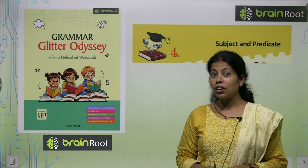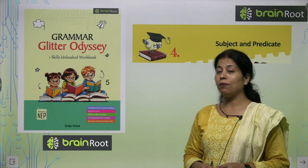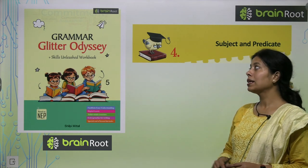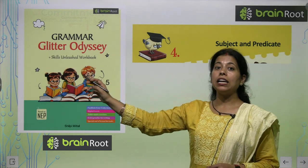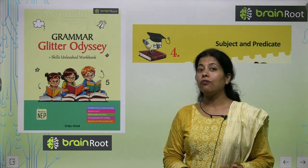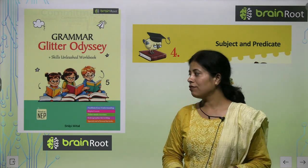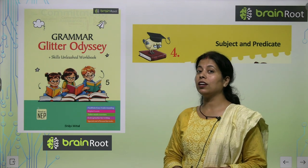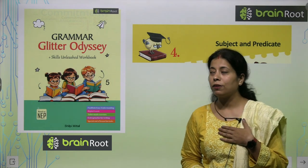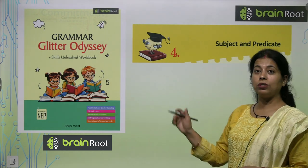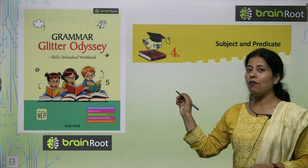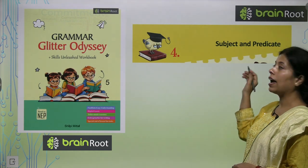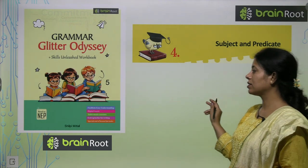Hello friends, hello young chums, welcome back to our class — English Grammar class by Grammar Glitter Odyssey of Grade 5 by Brain Road. It's a product of Amit Publishing House. I am your trainer Pooja. Today I will teach you the fourth chapter of our book: Subject and Predicate. Let's start.